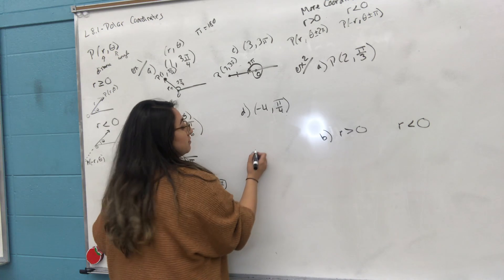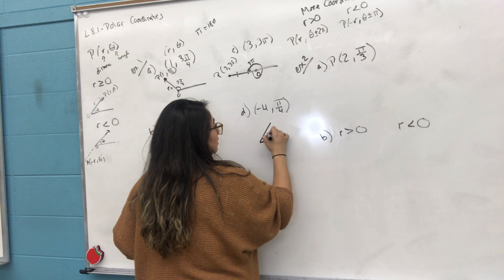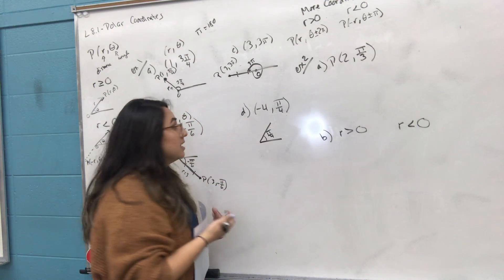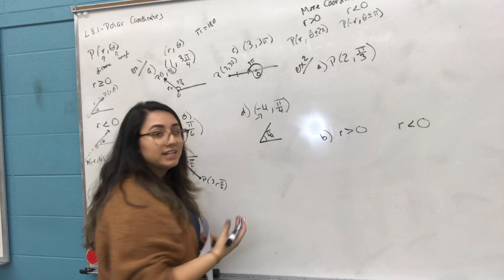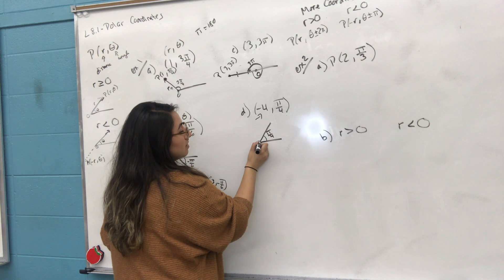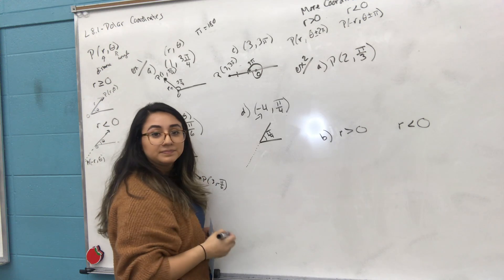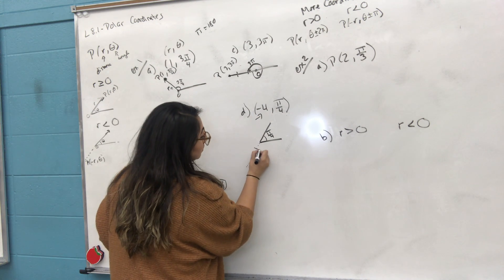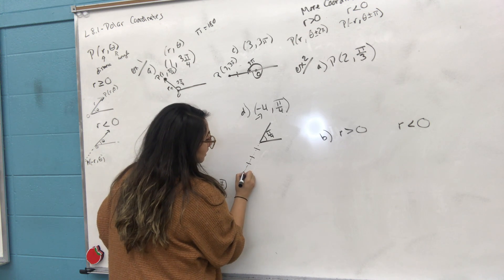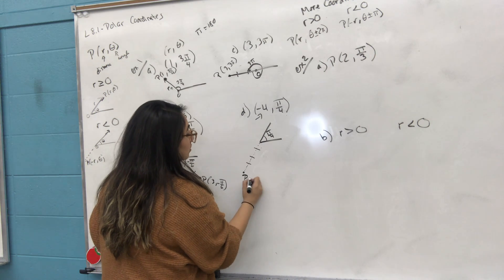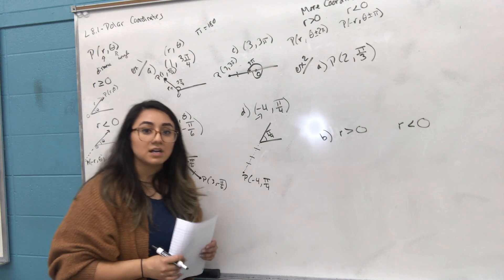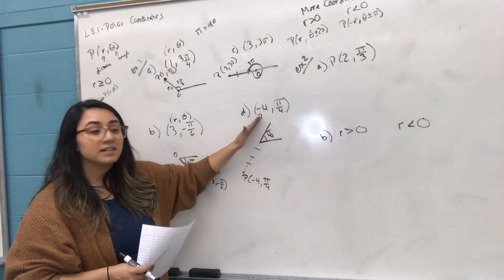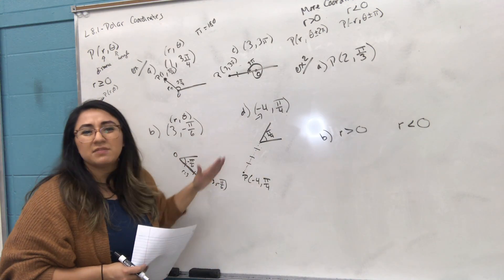Last one: (-4, π/4). First graph π/4 — I believe that's 45 degrees. You have your angle there. But remember, when the radius is negative, you have to create a line on the opposite side. So the line goes directly across from the π/4 direction. When it's negative, it's an opposite line. You draw a dotted line and split it into 4 equal parts. Your polar coordinate is (-4, π/4). When you have a negative radius, always graph in the opposite direction — think of a straight line through the origin.